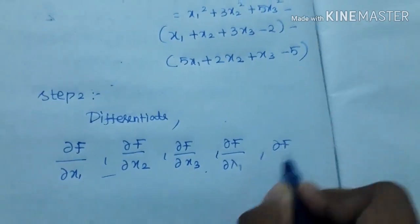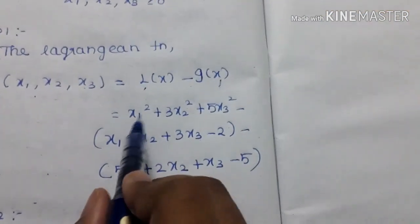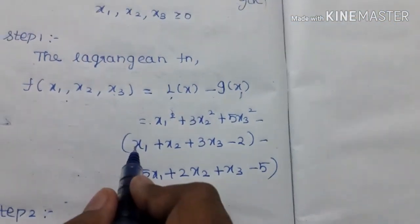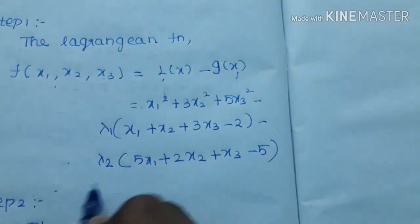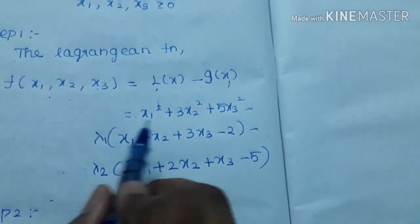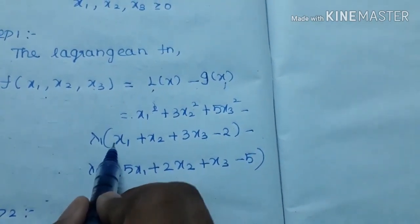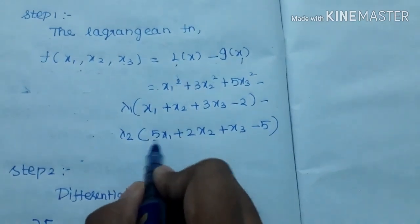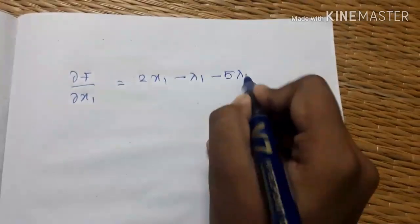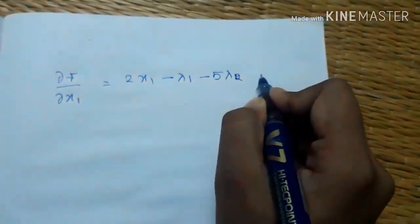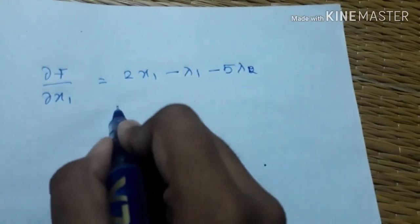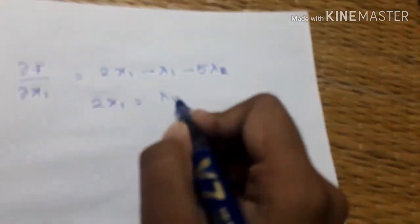Now we differentiate. First, differentiate with respect to x1. In the equation, x1 differentiates to give 2x1, and x2, x3 give 0. Next, from lambda1, the x1 coefficient is 1, so minus lambda1. From lambda2, the x1 coefficient is 5. So 2x1 is equal to lambda1.